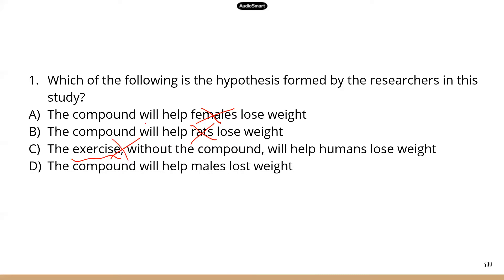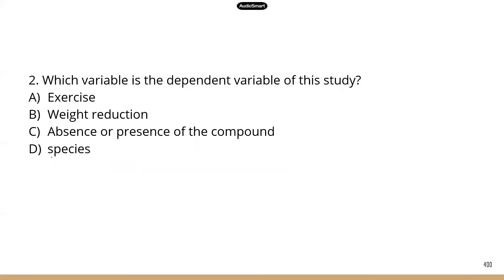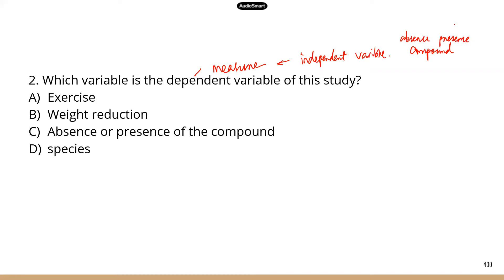Exercise could still be a controlled variable — you'd want to keep activity levels similar across groups. Answer D, the compound will help males lose weight — that's the correct hypothesis. Question two: which variable is the dependent variable? The independent variable is the compound — specifically the presence or absence of it, whether subjects ingest the compound or not. The dependent variable is what you measure in terms of results, which is weight loss. So B is the correct answer.